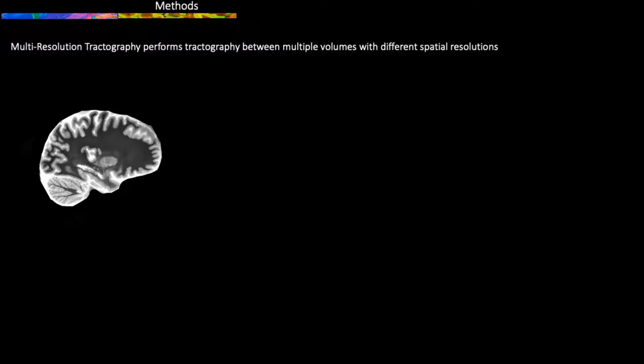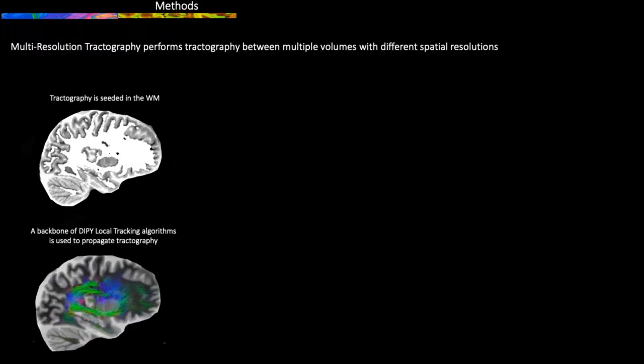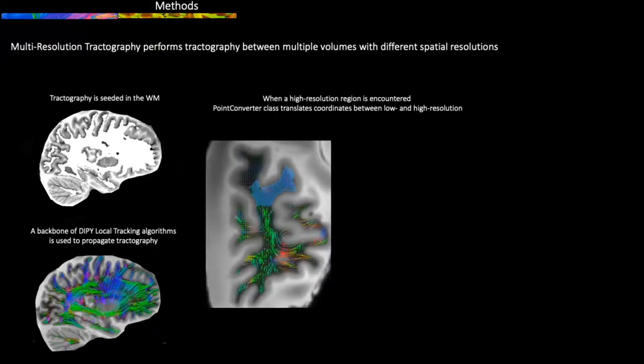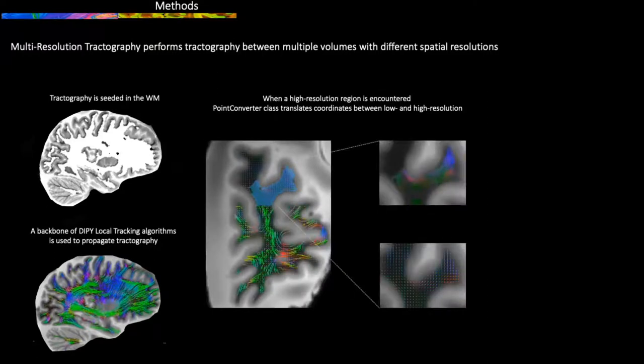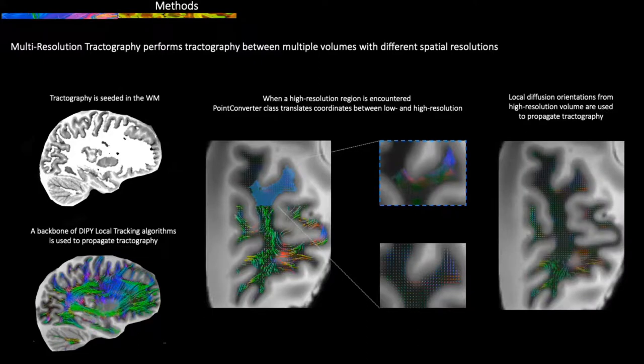Here is how the multi-resolution tractography works. Tractography is seeded in the hemisphere white matter, and the backbone of the iFOD2 local tractography algorithm is used to propagate tractography. When a high-resolution region is encountered, the local diffusion orientations from the high-resolution volume are used to propagate tractography.